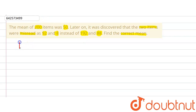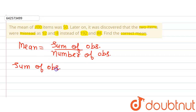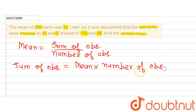The formula we are going to use is: mean equals sum of observations divided by number of observations. From here we can write: sum of observations equals mean multiplied by number of observations.